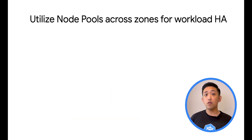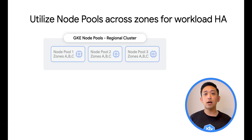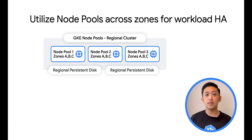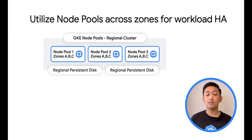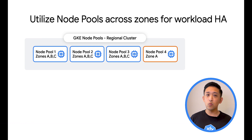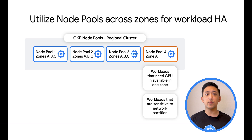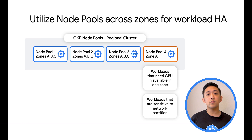Regional clusters also provide high availability at the node pool level, allowing for the allocatable resources like CPU and memory for your workloads to actually be distributed across zones. Paired with GKE's support for regional persistent disks, this makes your workloads, stateless or stateful, resilient across multiple failure domains. Of course, there are corner cases where you may need a workload only in one specific zone, for workloads that are latency sensitive or need specialized resources like GPUs that are only available in a single zone. GKE supports creating a node pool in a subset of the region zones as well.